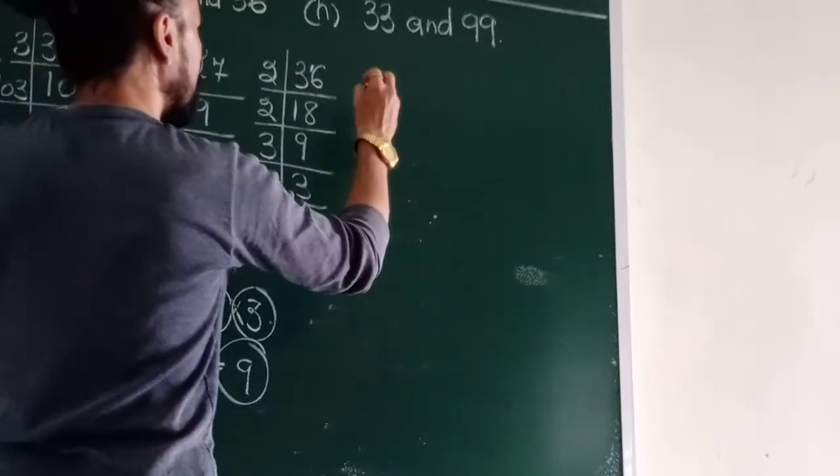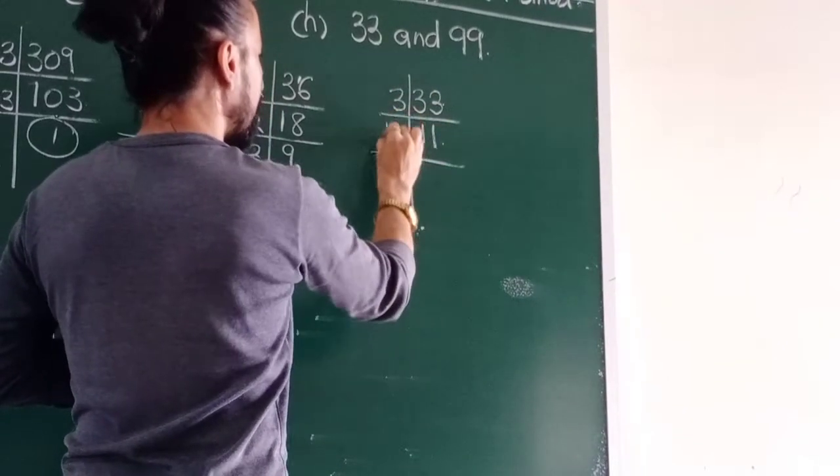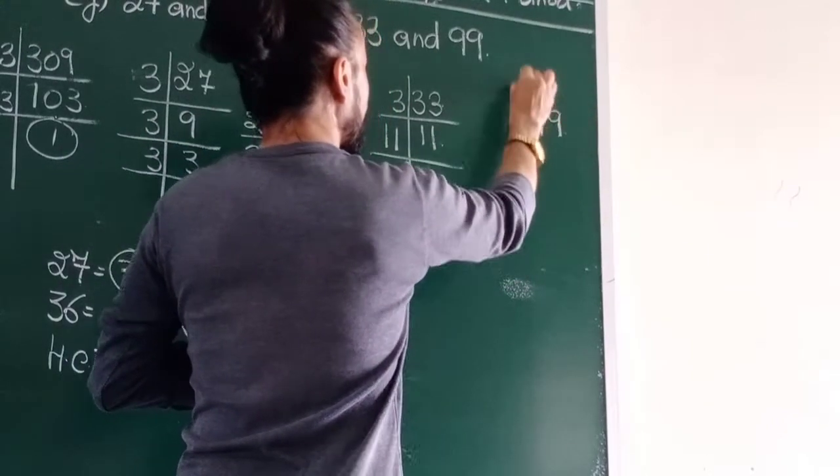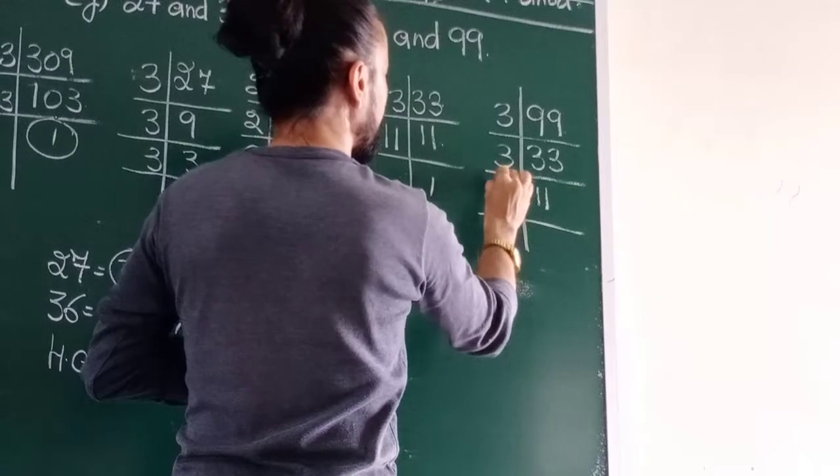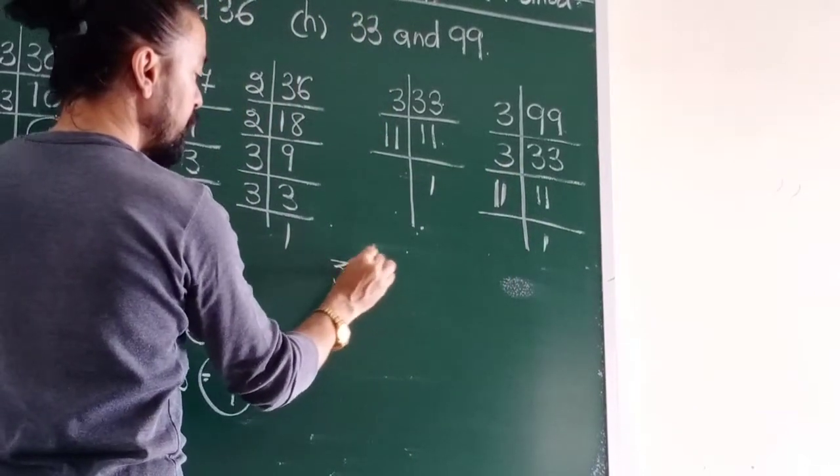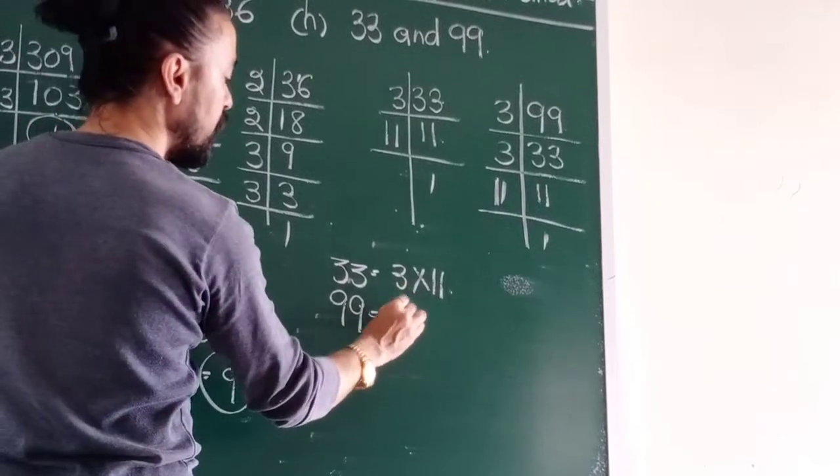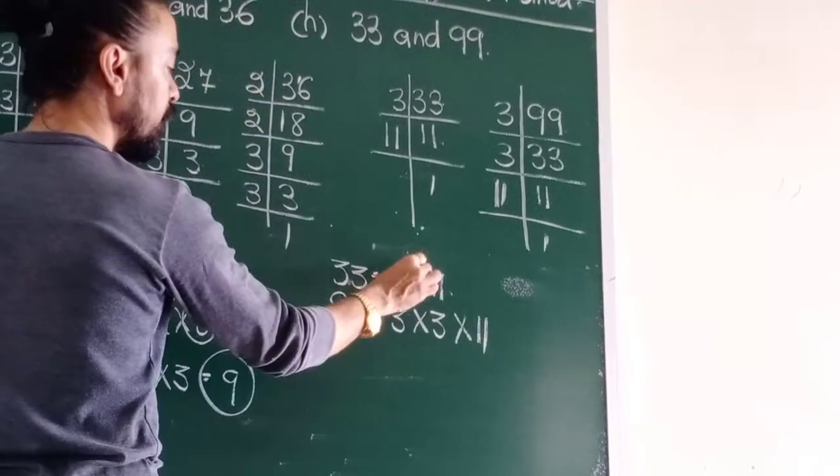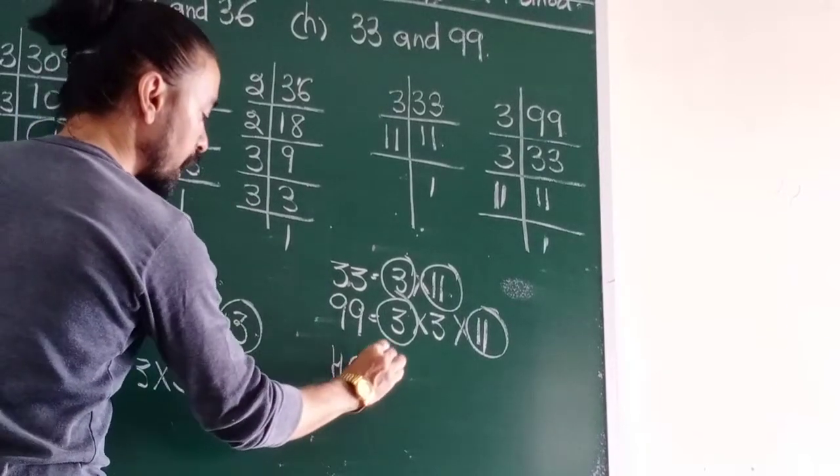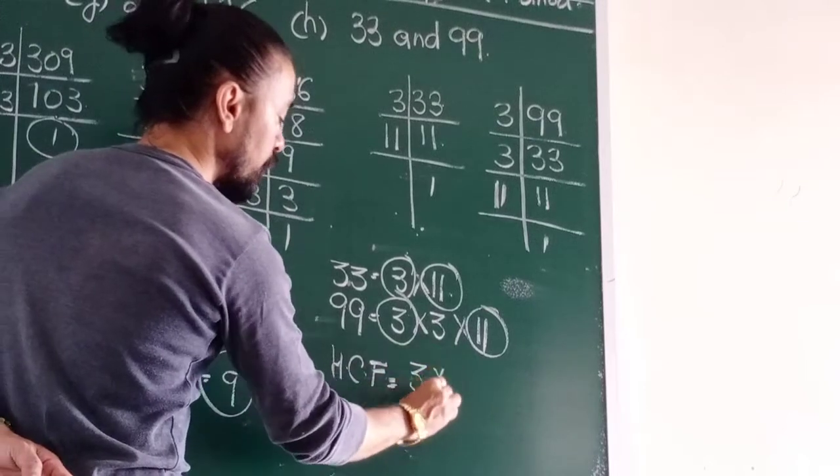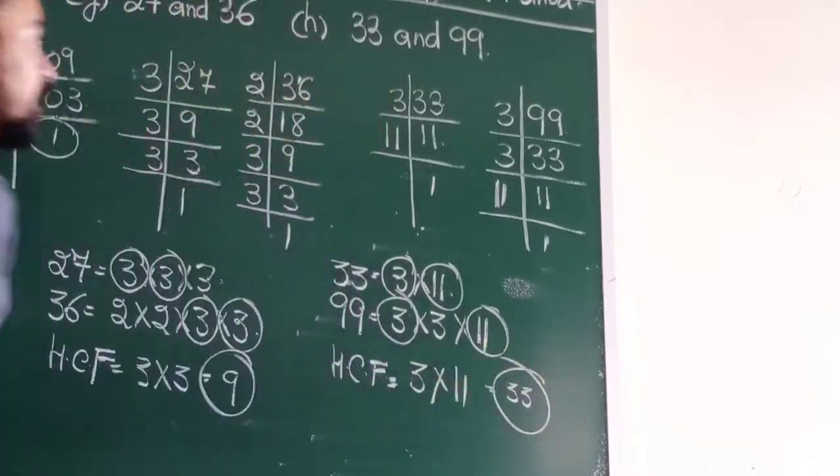So this is how you have to do sum D. Let's go to the last sum. So I take 33 and I factorize, 3 ones are 3, 11 is a prime number, 11 ones are 11. Then I take 99 and I factorize, 3 threes are 9, 3 threes are 9, 11 is a prime number. So 33 can be written as 3 into 11. And 99 can be written as 3 into 3 into 11. Common 3 and 3, 11 and 11. So my HCF, the highest common factor is 3 times 11, which is 33.